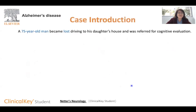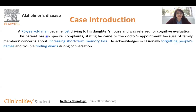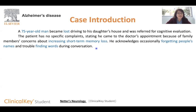This is a 75-year-old man who was lost while driving to his daughter's house, and he was subsequently referred for cognitive evaluation. When seeing the doctor, the patient stated that he has no specific complaints, saying that he only came because his family members were worried about his increasing short-term memory loss. He does admit that he sometimes forgets people's names and has trouble finding words when speaking to others.